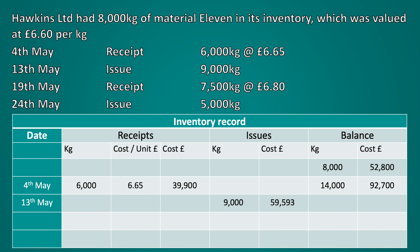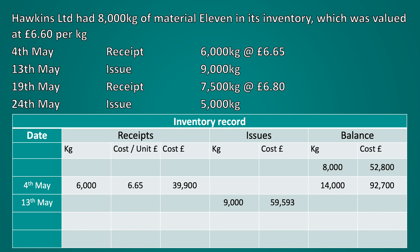We then need to calculate the remaining balance. Before the issue we had 14,000 kilograms and we've issued 9,000 kilograms, so the remaining balance in kilograms would be 5,000. The value of this inventory would be the balance before the issue of £92,700 less the value of the issue £59,593, giving us a new balance of £33,107.